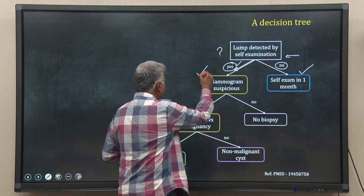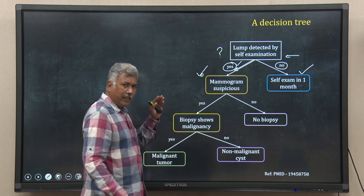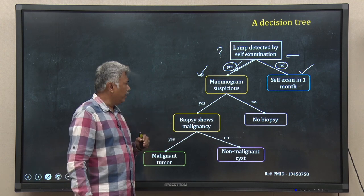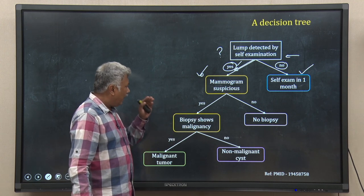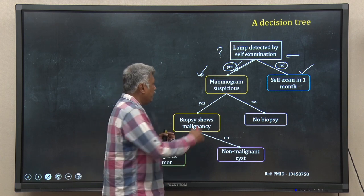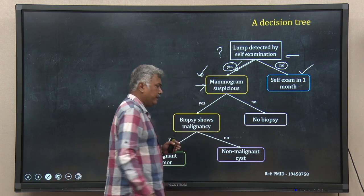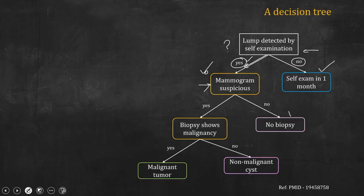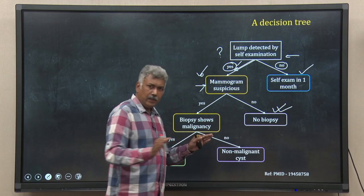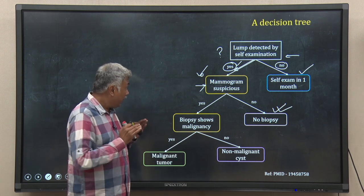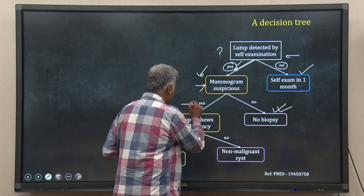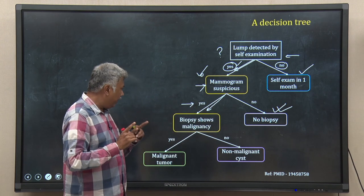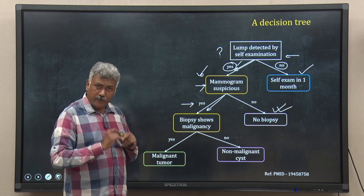Now look at this node. The clinician has recommended a mammogram and the report has come. The clinician asks the question: is the mammogram suspicious? If it is not suspicious, then the clinician decides we do not need any biopsy — the story ends there. If the mammogram is suspicious, following the yes arm of the tree, the clinician will go for a biopsy.